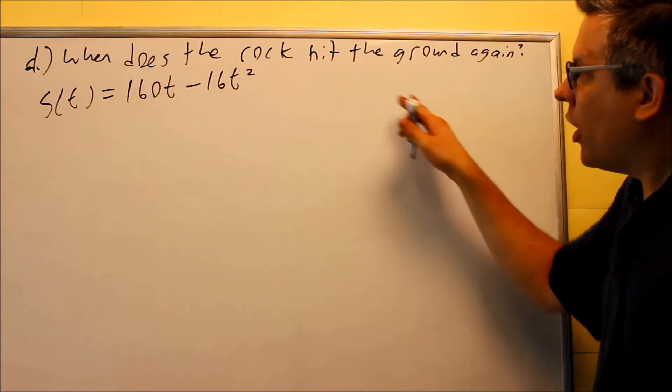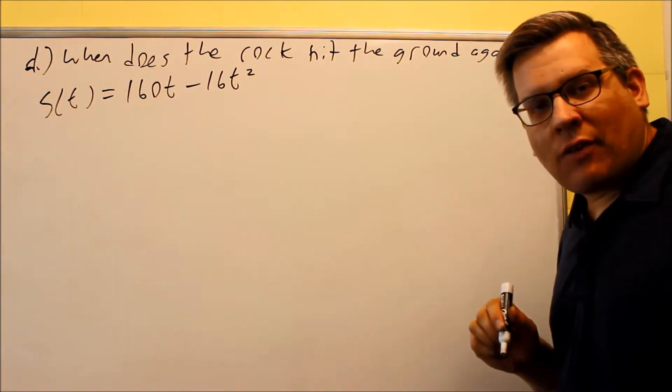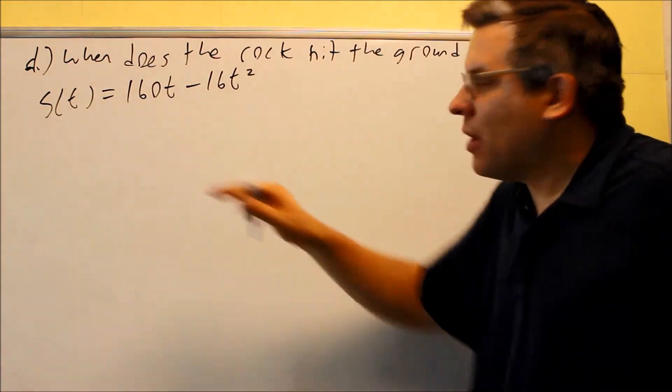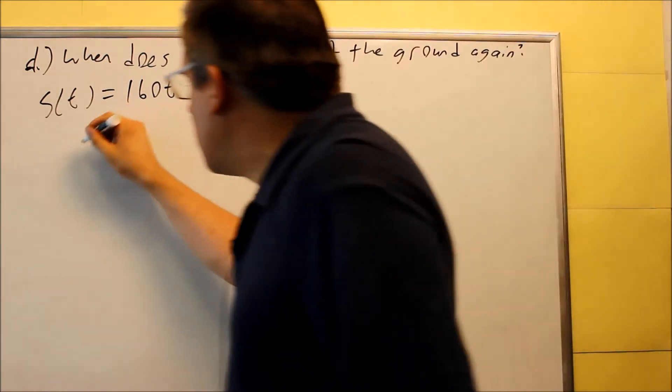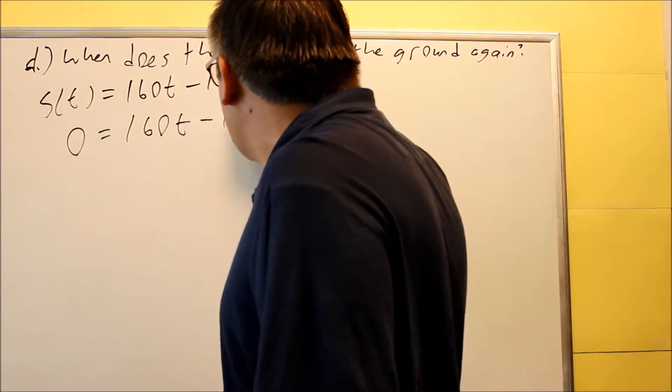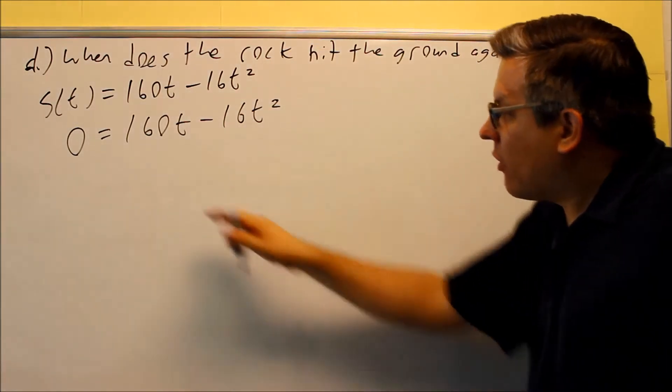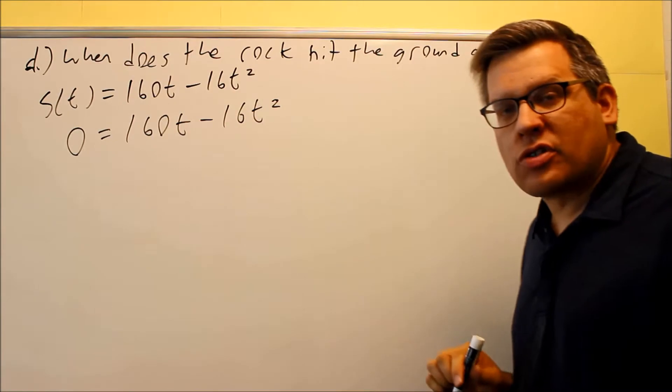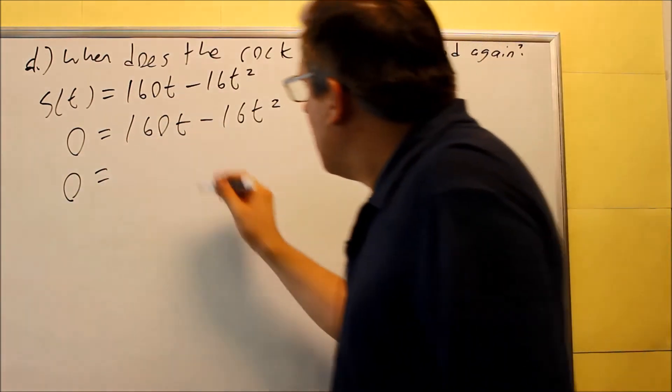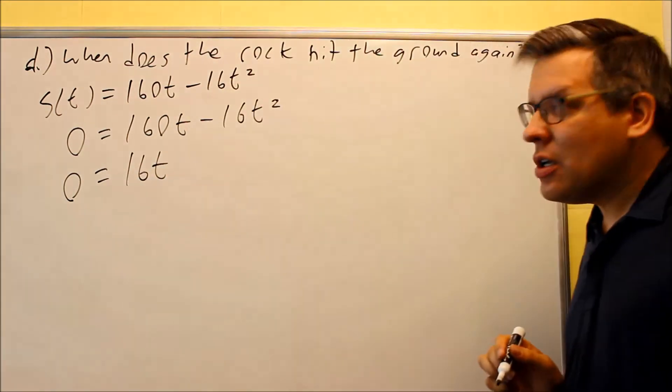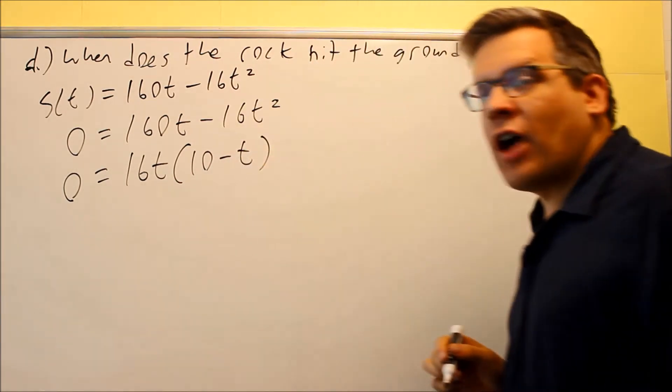Part d, when does the rock hit the ground again? If it hits the ground, that means the position is going to have to be 0 because this is talking about how high something goes after a certain amount of seconds. So if I just set this equal to 0, that's going to tell me when the object is not moving or when it's on the ground. For this problem, we're going to do factoring. Take out a common factor. In this case, you can factor out a 16t from both of those. And you're going to get a 10 minus t when you factor it.